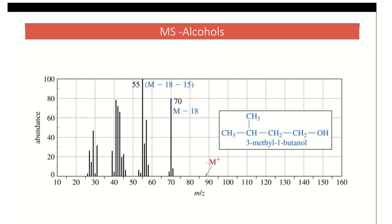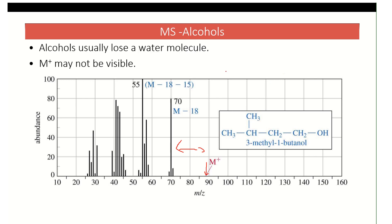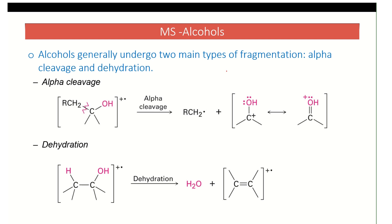For alcohols, you often see very little of the M⁺ peak but quite a bit of M-18 — loss of water. If you see an M-18 peak, you immediately know you have an alcohol. There's also alpha cleavage, which is the loss of a group adjacent to the functional group.